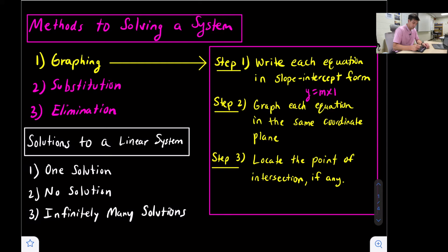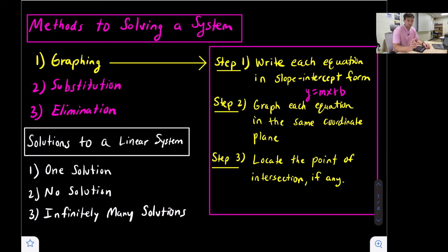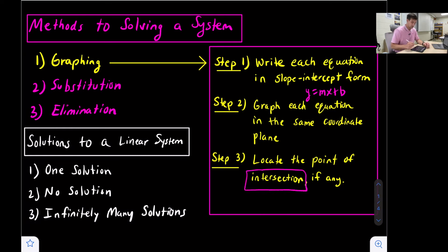Slope-intercept form is y = mx + b. If we have an equation that's not in slope-intercept form, we just need to rewrite it so that it's y = mx + b. Once we have the two equations in slope-intercept form, we're going to graph each equation in the same coordinate plane. That's very important because the solution to a system is the ordered pair that is a solution to both equations. When we graph an equation, the solutions are on the line. So if we have two lines and they intersect, we are trying to find the point of intersection — that would be our solution.